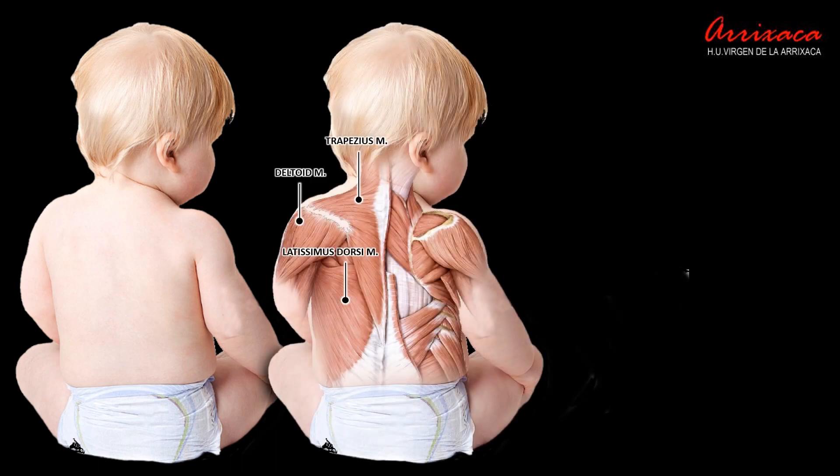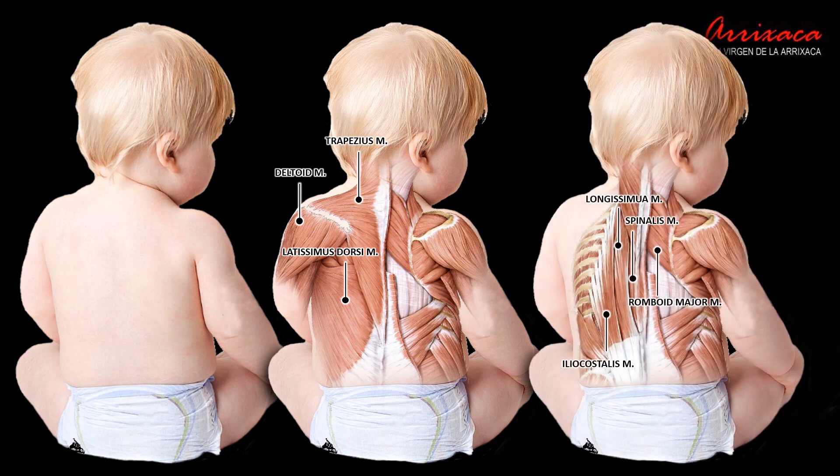The erector spinae muscle is a group of muscles located in the back and plays a significant role in maintaining upright posture, controlling movement of the spine, and providing stability to the vertebral column. It is situated on either side of the vertebral column and spans the length of the lower back to the upper back. The erector spinae muscle group is actually made up of three distinct muscles.